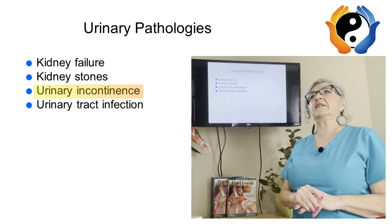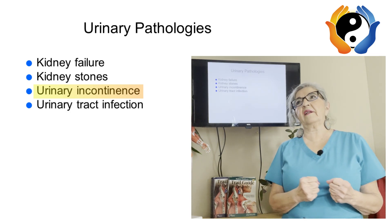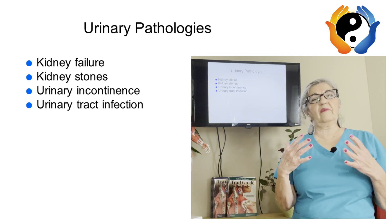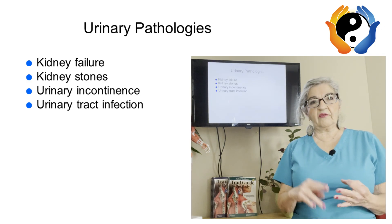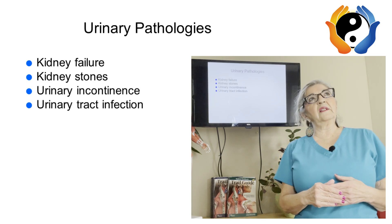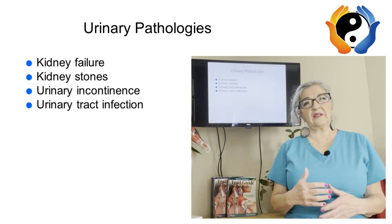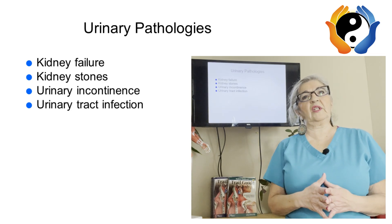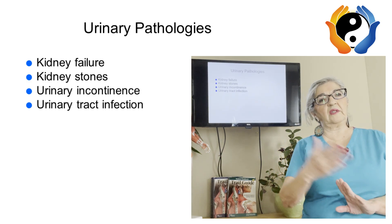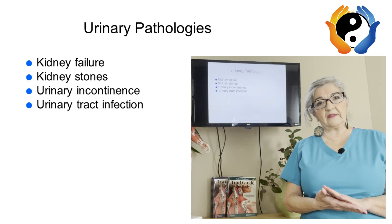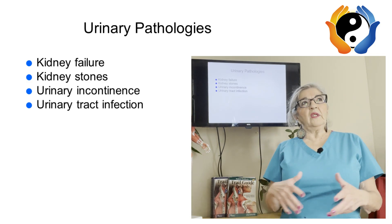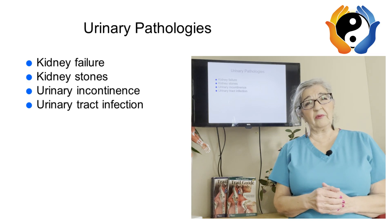Urinary incontinence is a loss of bladder control and there are two types. Stress incontinence is caused by physical stressors like coughing, sneezing, exercising, running, or jumping. Urge incontinence involves a constant strong sudden urge to go to the bathroom. For clients with incontinence, have them void their bladder before the massage, and make it accessible so they can get up from the table if they need to go.